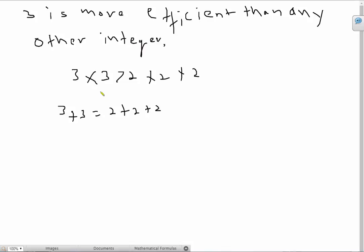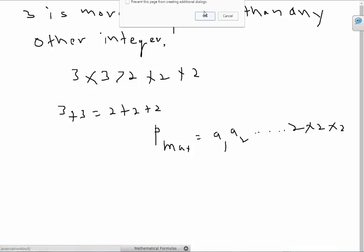Basically, what this implies is that if among my pmax, I have a1, a2, and so on, and somewhere in there I have three 2s, then I know that this cannot be pmax, because I can always write 2 times 2 times 2 as 3 times 3, and the sum will be the same, but the product will be larger.